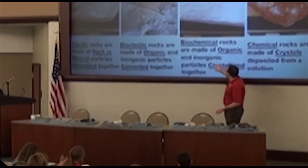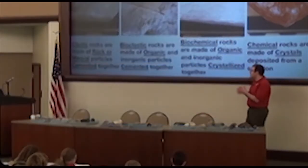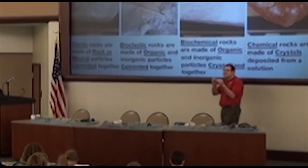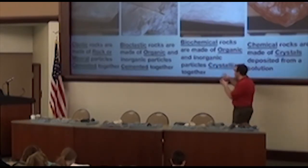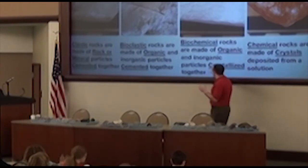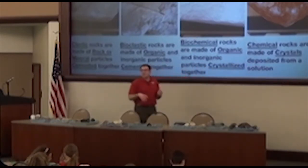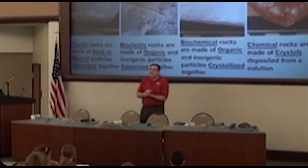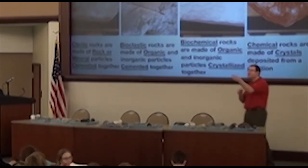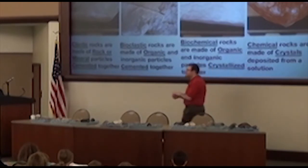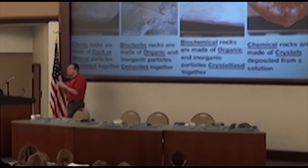Another category is biochemical rocks — kind of like chemical rocks, except it's got something that was living in it, but not made of pieces and parts where you could see a shell. It's more crystalline. Can somebody tell me one in your kit we might consider biochemical? Coal — that was the one I was looking for. Coal isn't truly crystalline, but we'd call it a biochemical rock because it's made of lots of biological material.